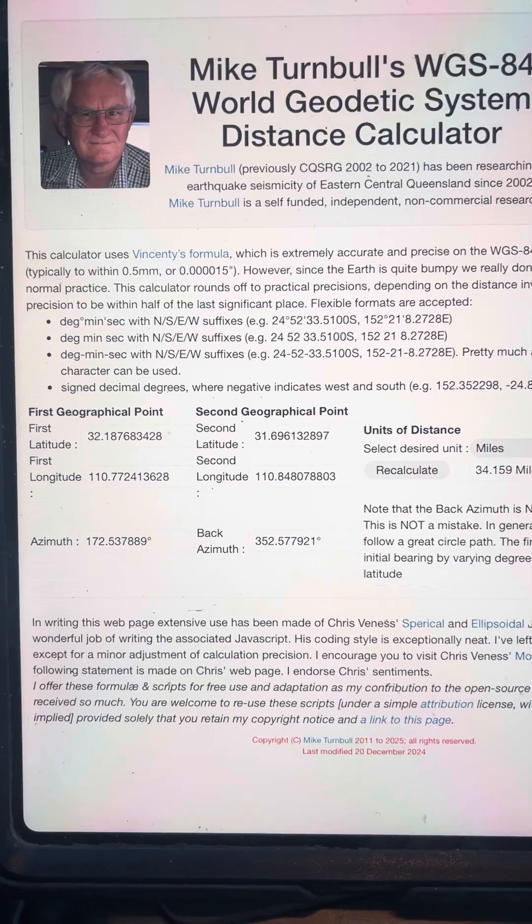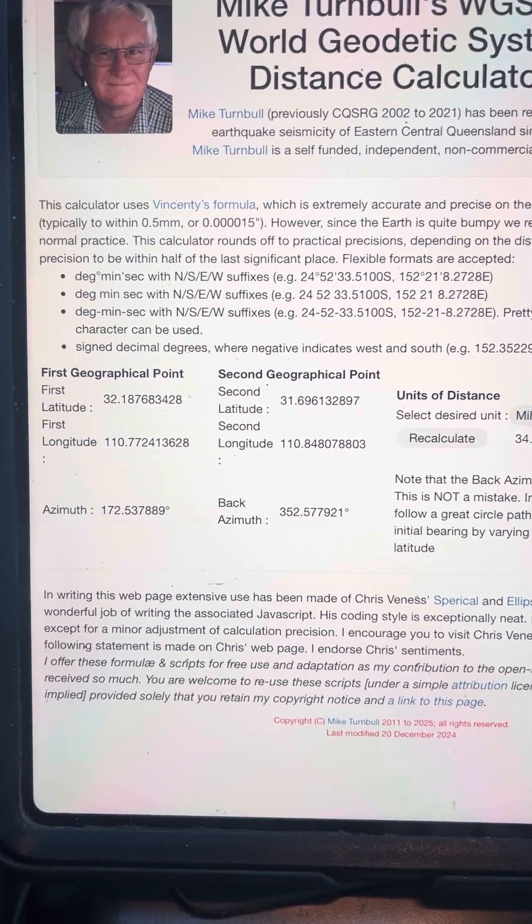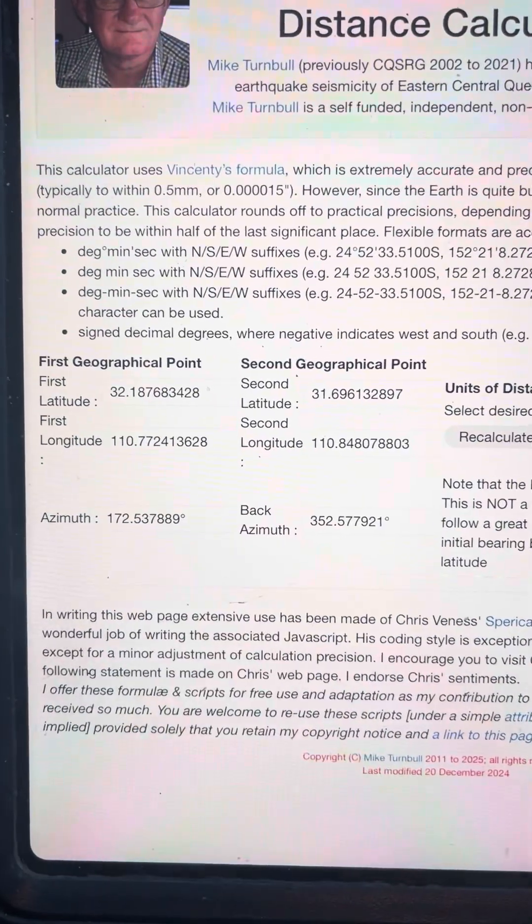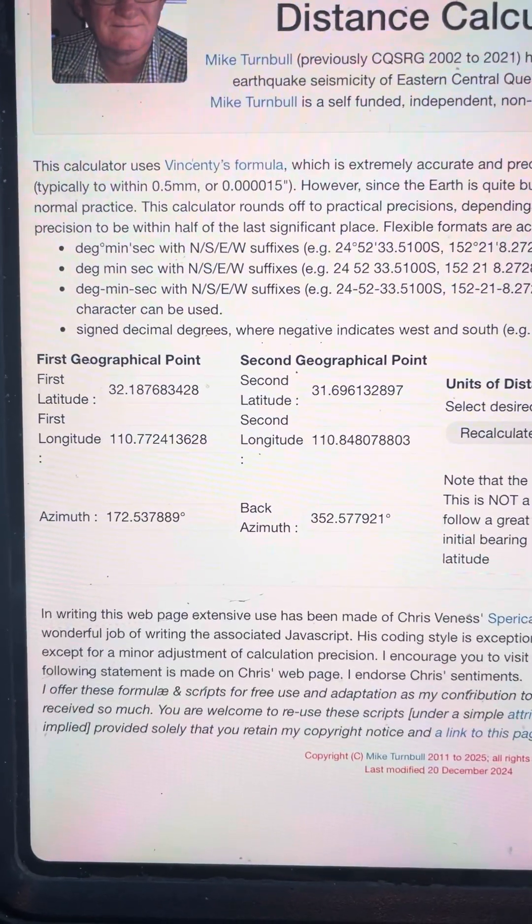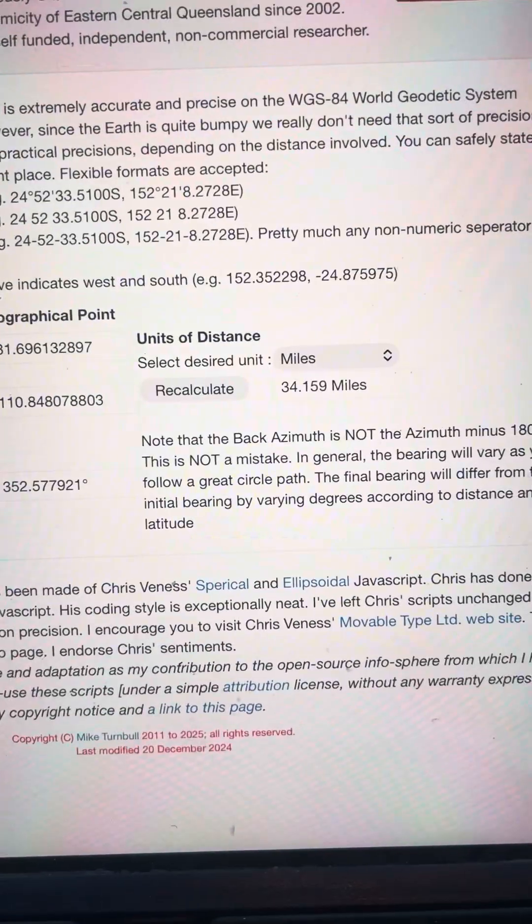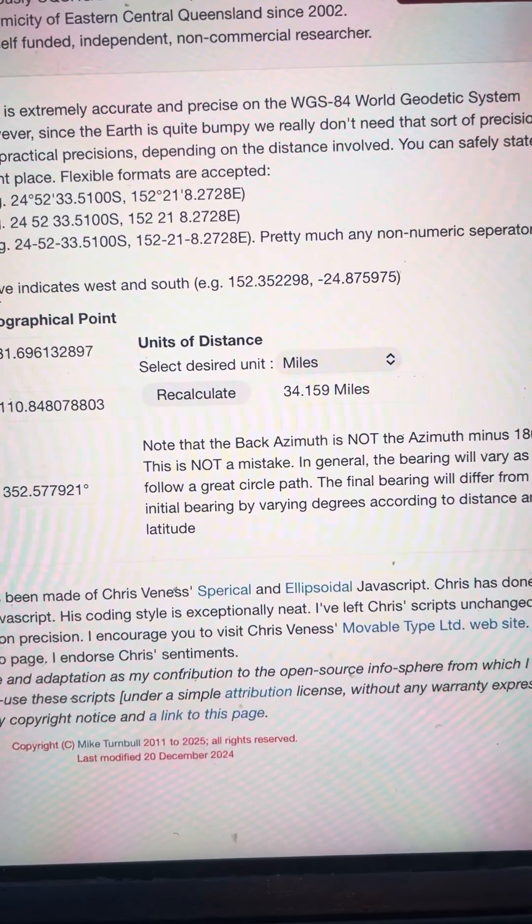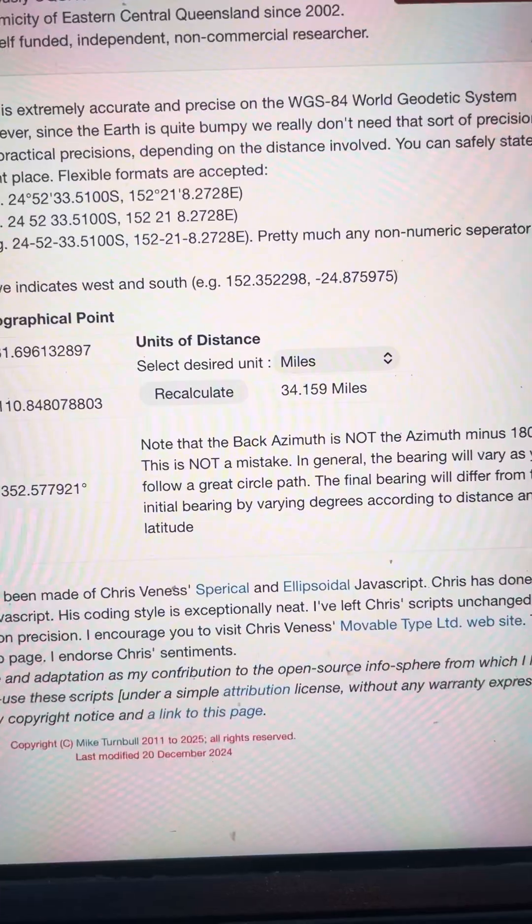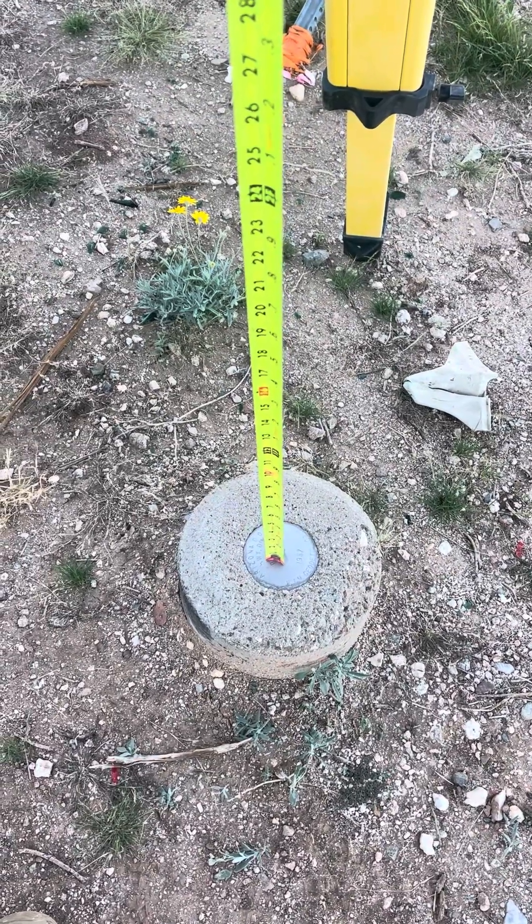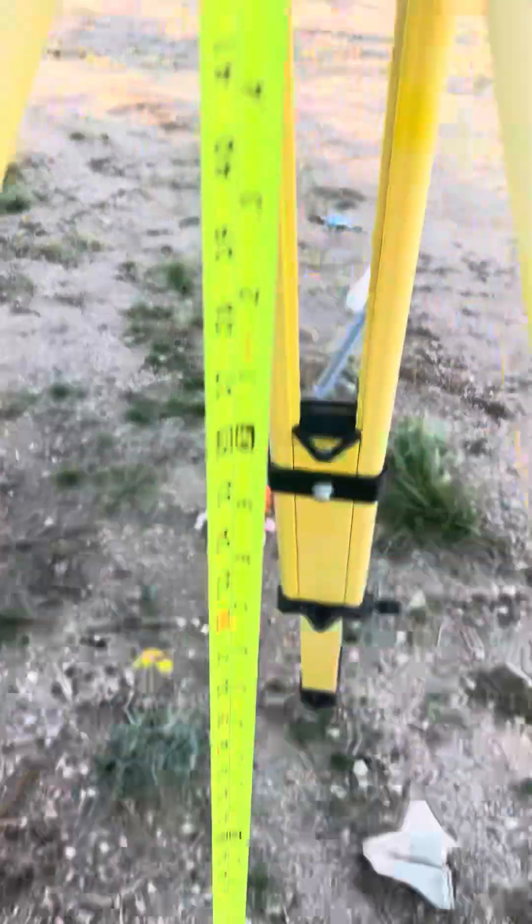Here are the coordinates for those two points in decimal degrees. This is where I am located, that is my latitude and longitude, and this is the target which I will be sighting. I come up with a calculated distance of 34.159 miles.